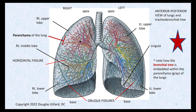We have the right lung, of course — there are three lobes: the upper lobe, middle lobe, and lower lobe. On the left lung, we only have an upper and a lower lobe, which is separated by an oblique fissure. The oblique fissure in the right lung separates the middle lobe from the lower lobe — that's an easy board question. There's also a horizontal fissure in the right lung that the left lung doesn't have. The left lung has a lingula, which is a remnant of the middle lobe.